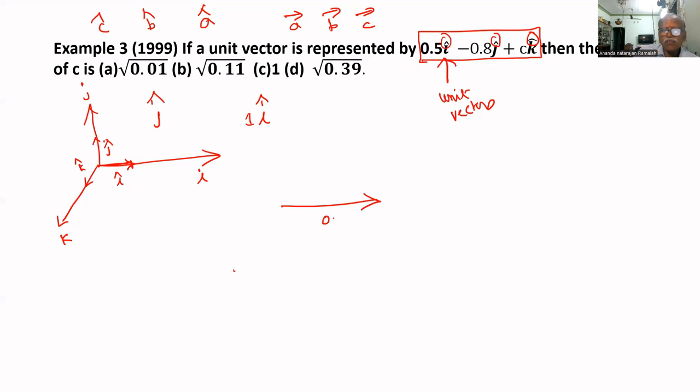This way 0.5 I minus 0.8 J, downward direction because upward is positive, plus C K. In this direction, C - its magnitude is C. This is Z direction, this is X direction, this is minus Y direction. The unit vector is represented by this, then we have to find the value of C.